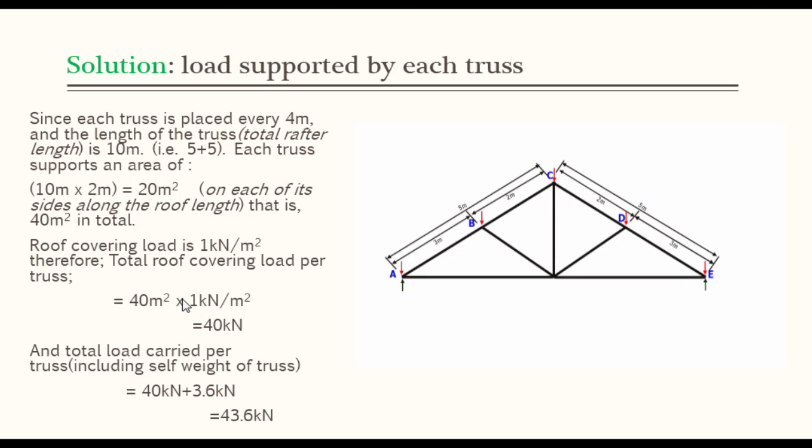and the length of the truss, that is, total rafter length is 10 m, that is, 5 plus 5, each truss supports an area of, that is, a roofing area of 10 times 2 m, which is equal to 20 m² on each of its sides along the roof length, that is, 40 m² in total.